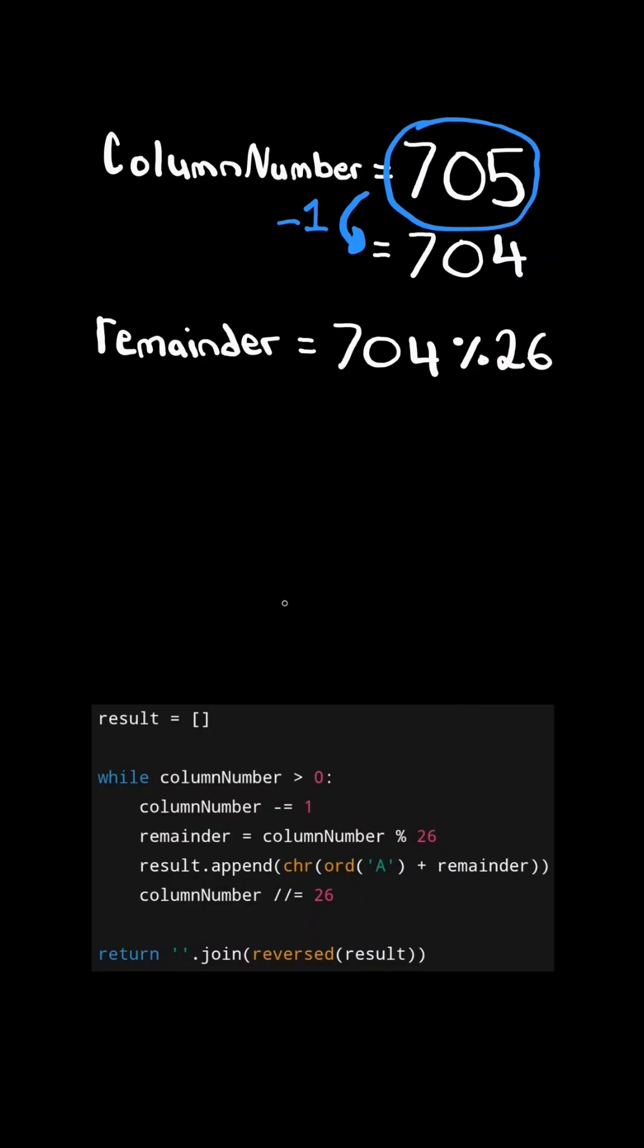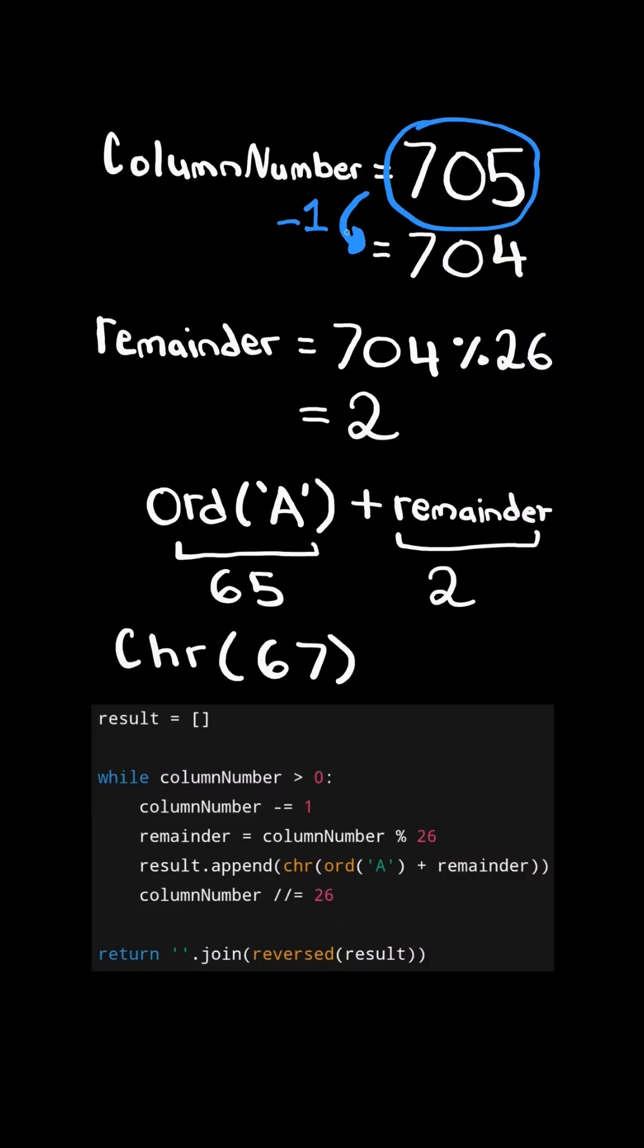We then calculate the remainder between the column number and 26. This gives us two. We then use the Python function ord to get the ASCII value of A, which has ASCII value 65, and we add it to the remainder. We then convert this result back to a character. In this case, the character is C, and we append the character to a list.